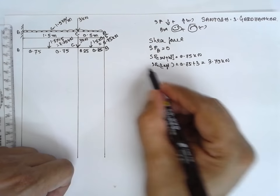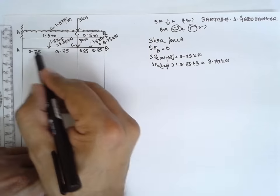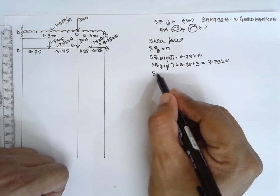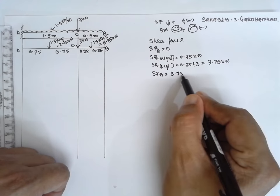Next, at A. At A, it is a fixed end but there is no load acting. No load acting here. Therefore, SF at A will be same value, 3.75 kilonewton.